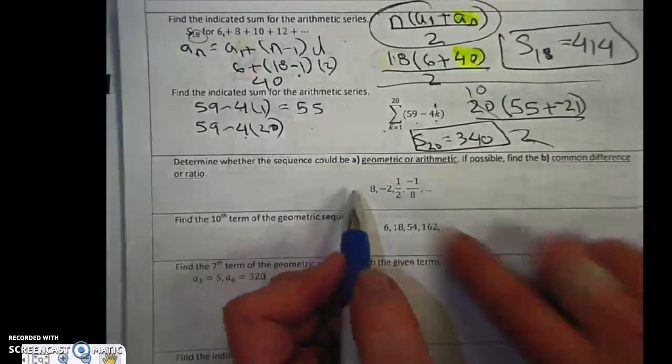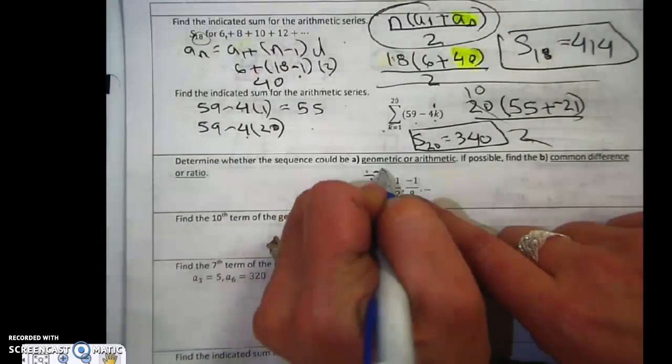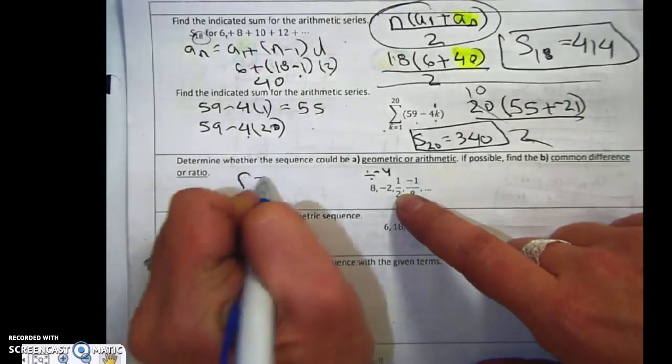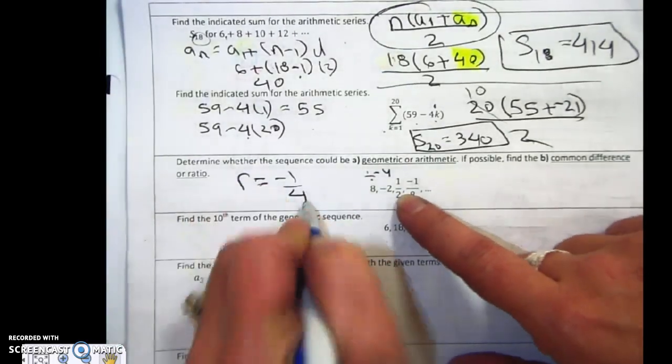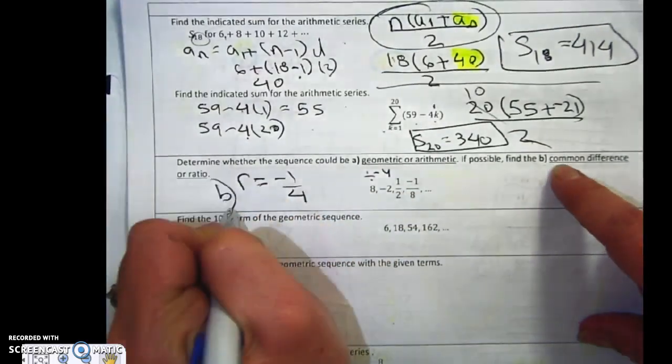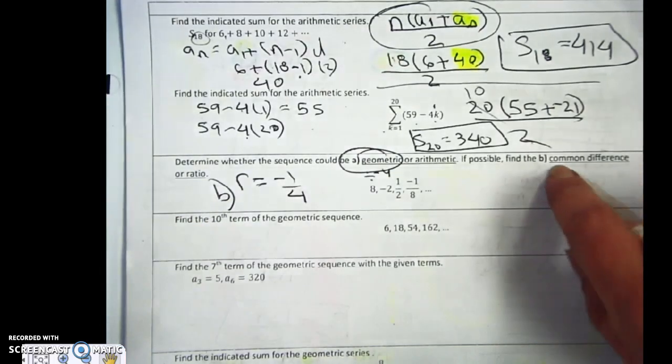Next question. Geometric or arithmetic? I notice it's divided by negative 4, which means the ratio is negative 1 fourth. That answer is letter B. And it's geometric.